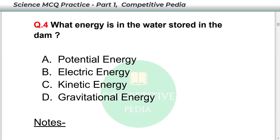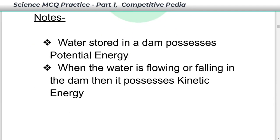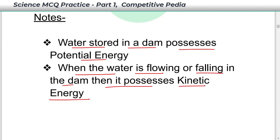What energy is in the water stored in a dam? The energy is potential energy — option A is your answer. Water stored in a dam possesses potential energy, and when the water is flowing or falling in the dam, then it possesses kinetic energy.